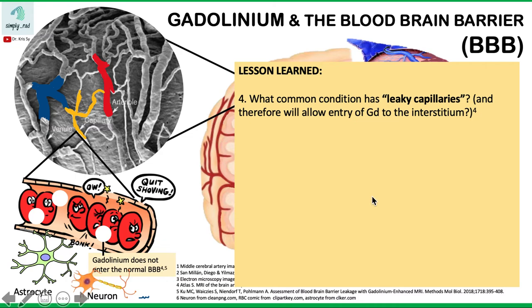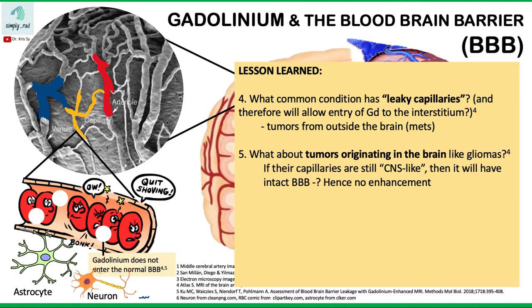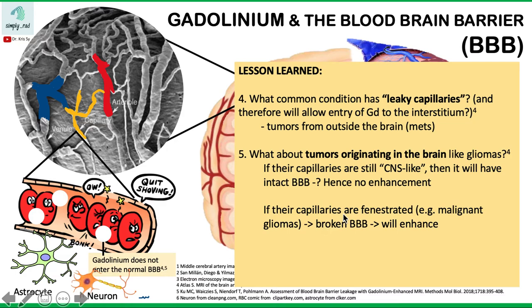What common condition would have leaky capillaries, allowing entry of gadolinium to the interstitium? A good example would be tumors from outside the brain, such as metastasis. What about tumors originating within the brain, like gliomas? If their capillaries are still CNS-like, then they will have an intact blood-brain barrier and there will be no enhancement. However, if the capillaries are fenestrated, such as in malignant gliomas, there will be a broken blood-brain barrier, and that lesion would enhance.